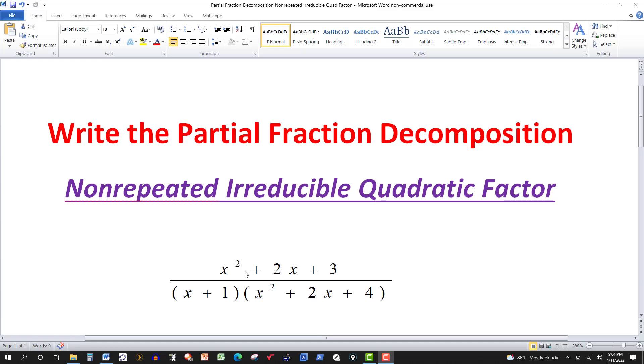In this problem, we have a rational expression that has what is called a nonrepeated irreducible quadratic factor. In other words, this one here in the denominator x squared plus 2x plus 4 doesn't factor. And of course, the x plus 1 is a linear factor that is not repeated. So the way this setup works then, keep in mind that we're looking at rational expressions that are in proper form. That is, the degree of the numerator is less than the degree of the denominator. And that's the case here, numerator is degree 2, denominator is degree 3.